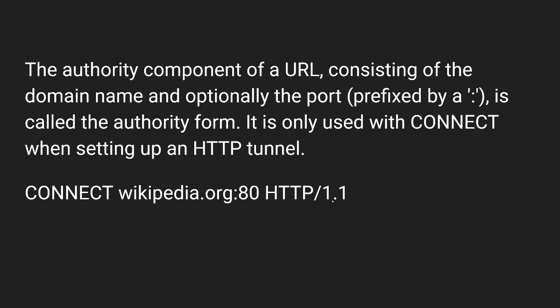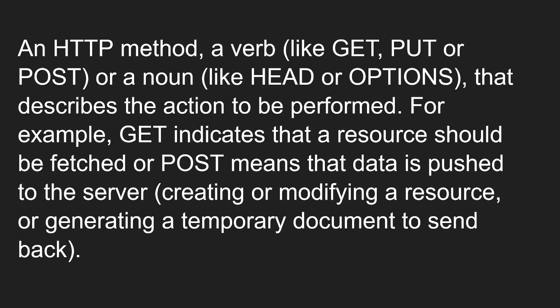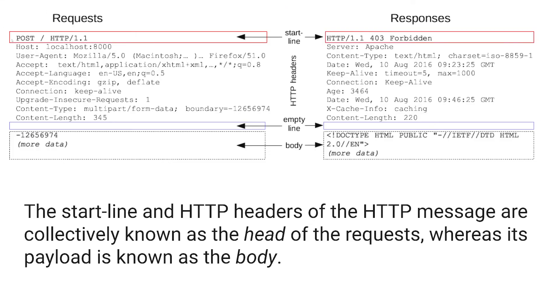The third element is the HTTP version, for example HTTP/1.1, which defines the structure of the remaining message and acts as an indicator of the expected version to use for the response. So overall, the start line contains: the method (GET, POST, PUT, HEAD, OPTIONS, etc.), the request target (an absolute URL or path with query parameters), and the HTTP version.